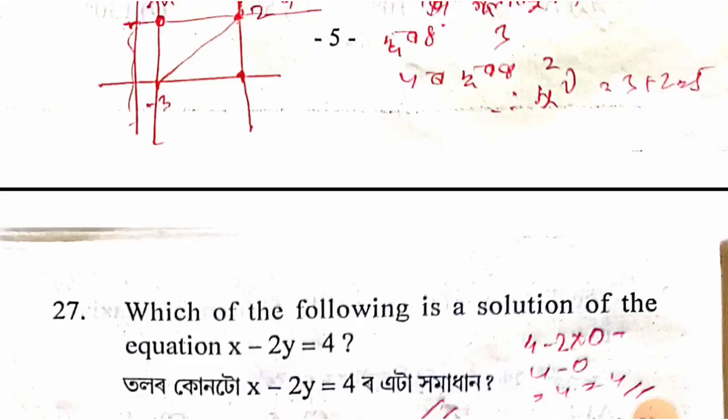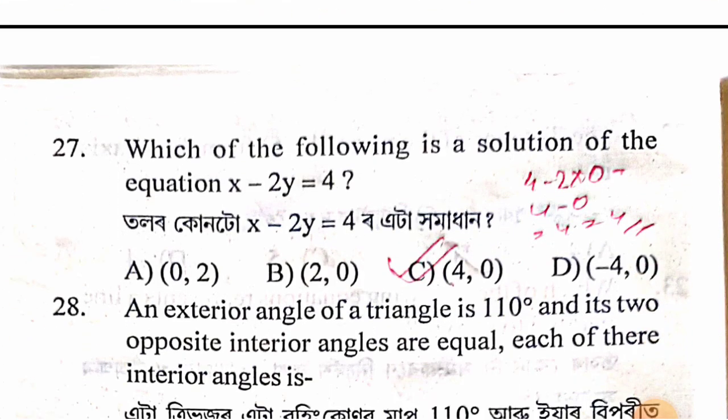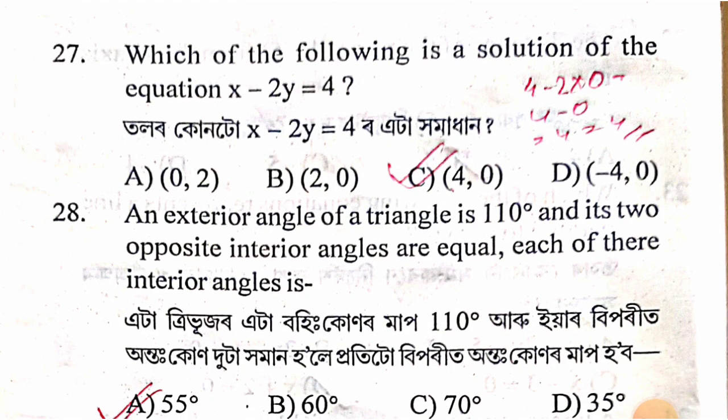For x − 2 = 4: solving gives x = 6. The solution is (6, 0), option D, as y = 0 on the x-axis.